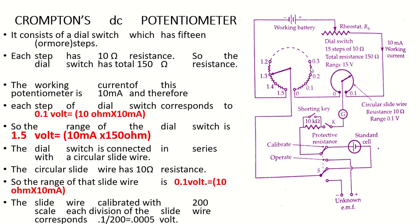This large dial switch is connected in series with a circular slide wire. This small circular slide wire has a total resistance of 10 ohm. So the total voltage across the slide wire is 10 ohm × 10 milliampere = 0.1 volt. Therefore, the total range of this small slide wire is 0.1 volt, while the range of the large dial switch is 1.5 volt.